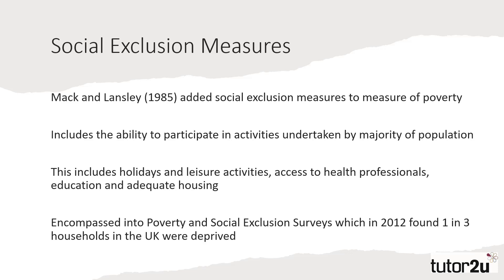A further measure of poverty was introduced by Mack and Lansley in 1985. They adopted a more consensual approach to studying poverty and rated individuals based upon the most commonly held social and economic indicators of a decent standard of living. Like Townsend, they scored individuals based upon their ability to afford or engage in these activities, introducing elements of social exclusion. These included holidays and leisure activities, access to healthcare provision, quality of education and adequate housing.